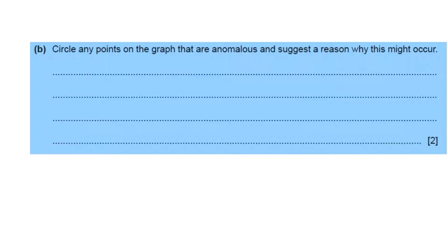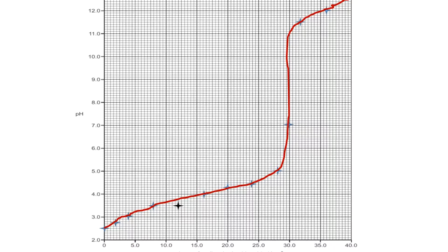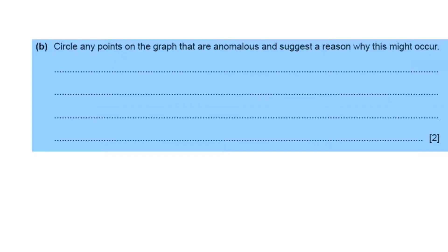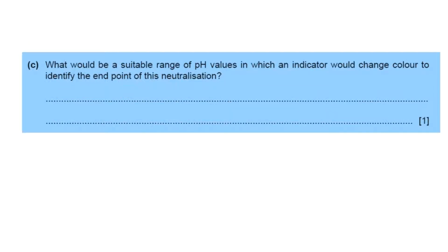From here, we have to find out the anomaly in question B. The anomalous point is here, the line indicated, and volume of sodium hydroxide is 12 and the pH is 3.52. This anomalous point at 12, 3.52 occurred because sodium hydroxide did not properly mix with the acid.